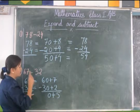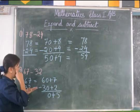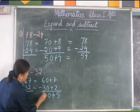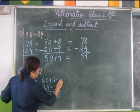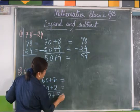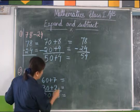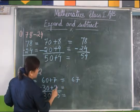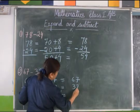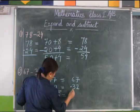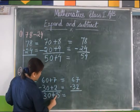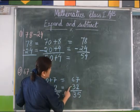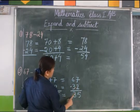For the tens: 6 on top, 3 on our finger: 6, 5, 4, 3. So 6 minus 3 is 3. We will write these numbers in compact form now. 60 plus 7 is 67. 30 plus 2 is 32. The result is 30 plus 5, which is 35. Therefore, 67 minus 32 is 35.